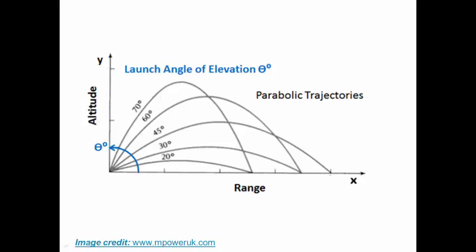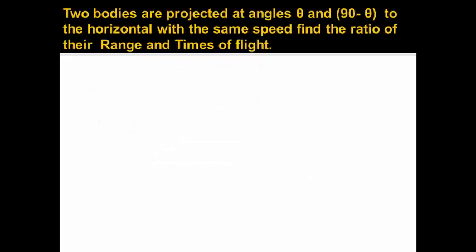Let us solve an example regarding complementary angles. Now two bodies are projected at angles θ and 90 - θ to the horizontal with the same speed. Find the ratio of their range and times of flight. As we have already discussed, range is same for complementary angles, hence R₁ : R₂ will be 1 : 1.